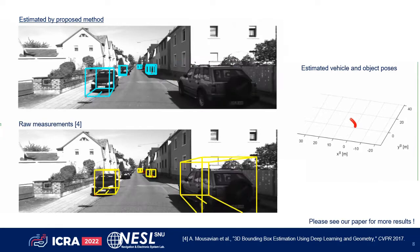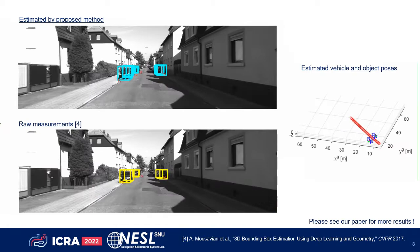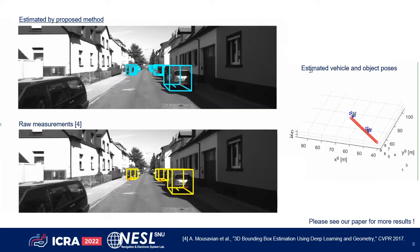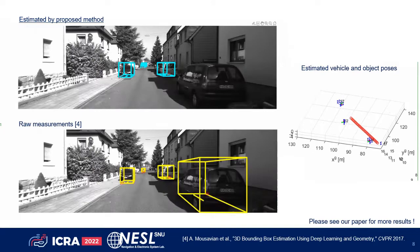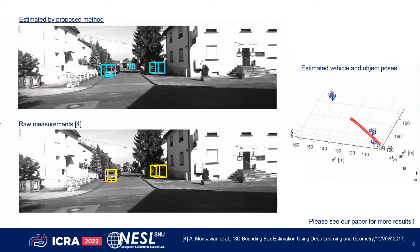Here is a demo video in the KITTI dataset. Yellow boxes are raw measurements from a deep neural network-based pose detector trained on the KITTI benchmark dataset. As we claimed before, it exhibits imprecise noisy measurements from a single image. In contrast, we fuse all these local poses in a fully probabilistic fashion on matrix Lie groups to obtain better localization and mapping accuracy.